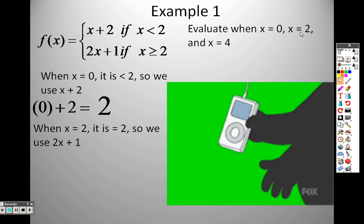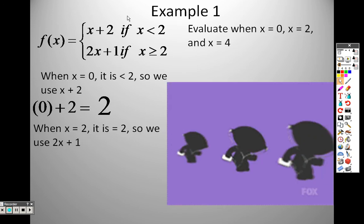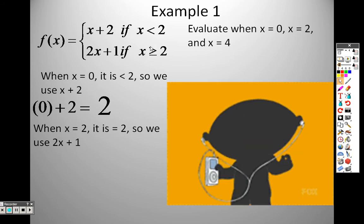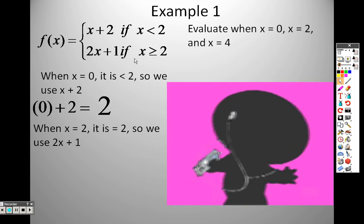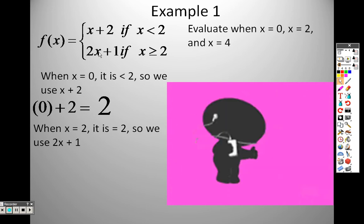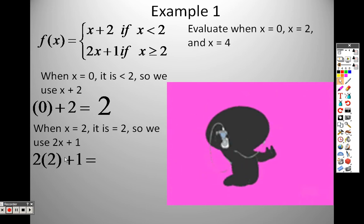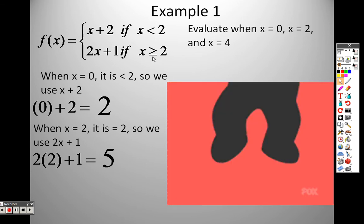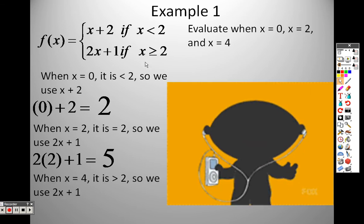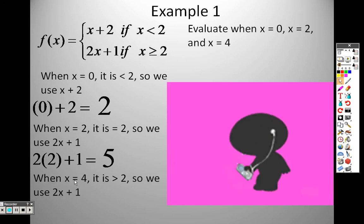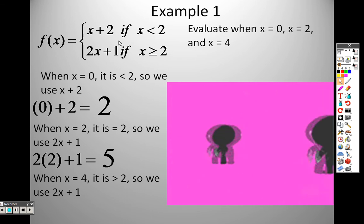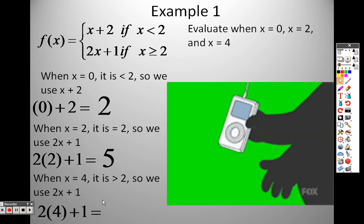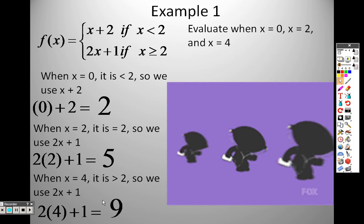With x equals two: looking at the conditions, x equals two falls under the bottom piece because it's greater than or equal to two. So plug two in: two times two plus one equals five. Then x equals four — four is also greater than or equal to two, so use two x plus one: two times four plus one equals nine.